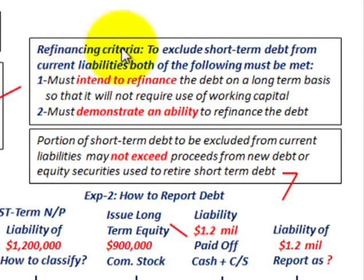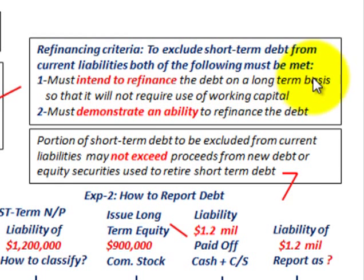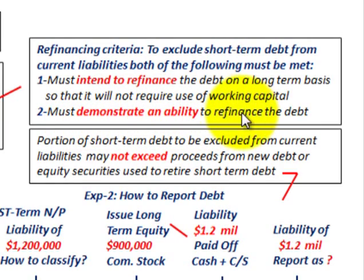To exclude short-term debt from current liabilities, both of the following must be met. First, you must intend to refinance the debt — that is, the short-term debt — on a long-term basis, so that it will not require use of working capital. Second, you must demonstrate an ability to refinance the debt.